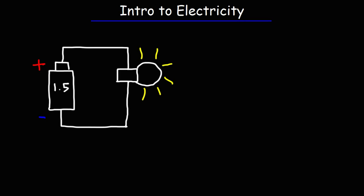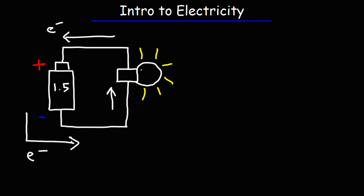This video is for those of you who want a basic introduction into electricity. Electricity is the flow of electrons. In a circuit we have a 1.5 volt battery connected to a 1.5 volt light bulb. Electrons flow from the negative terminal of the battery through the light bulb and back to the positive terminal of the battery. As the electrons flow through the light bulb, they heat up the filament inside and when it gets hot, it generates light through incandescence.